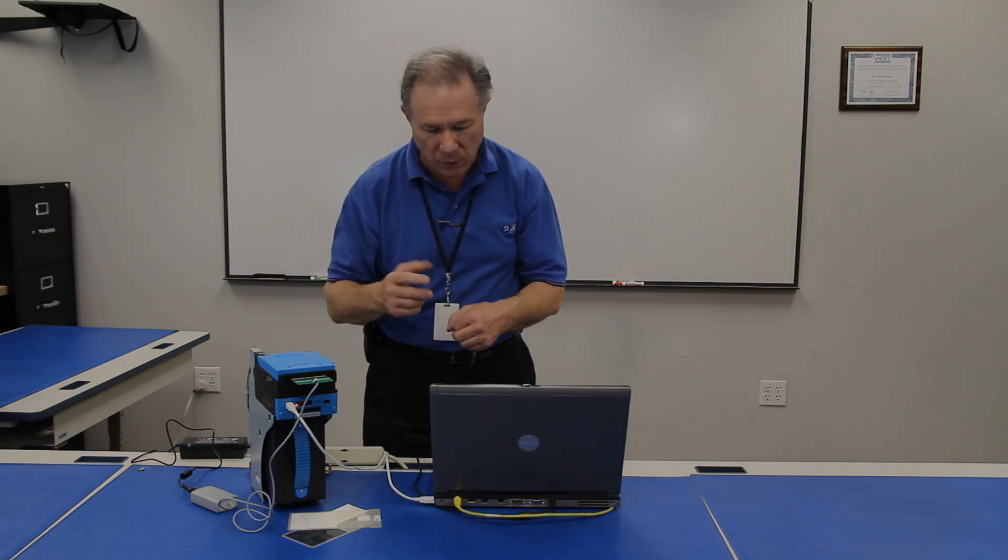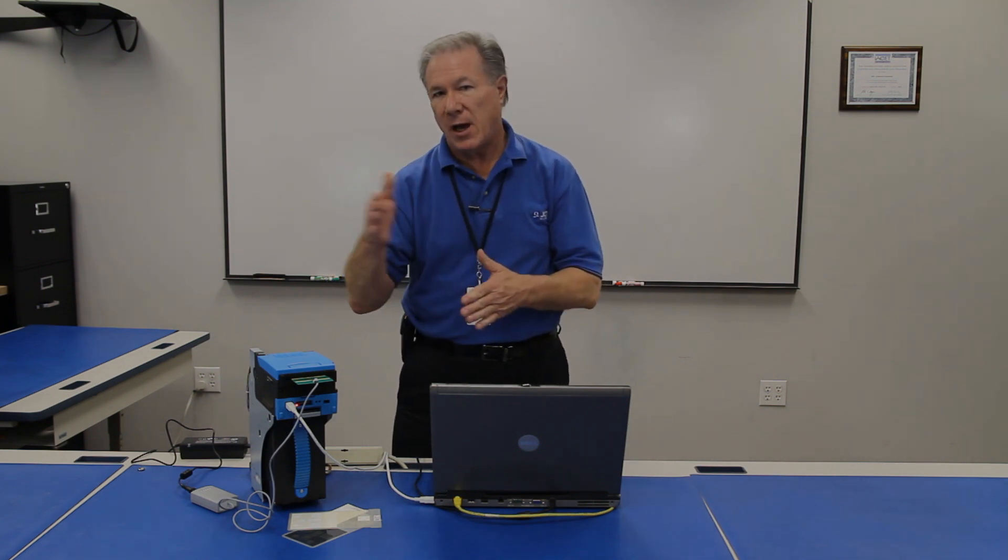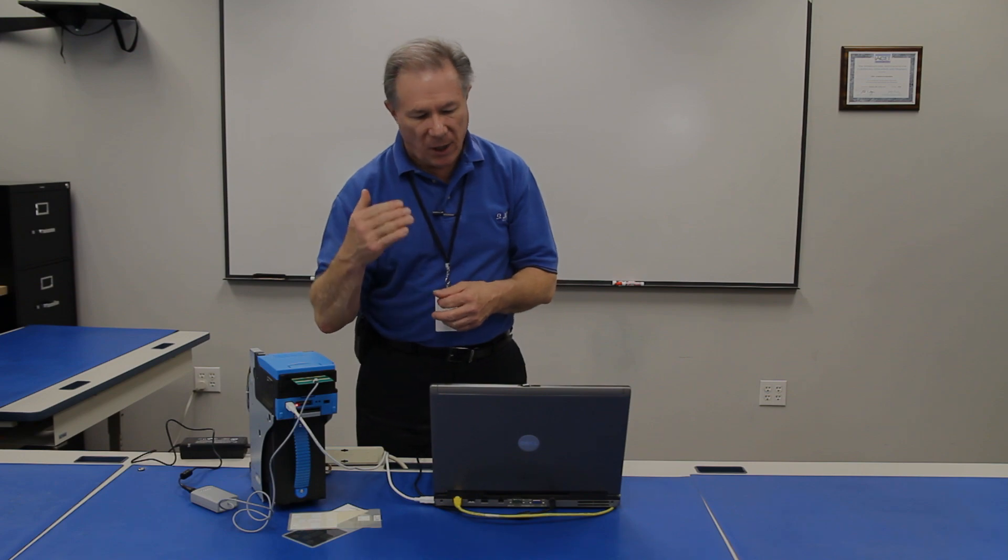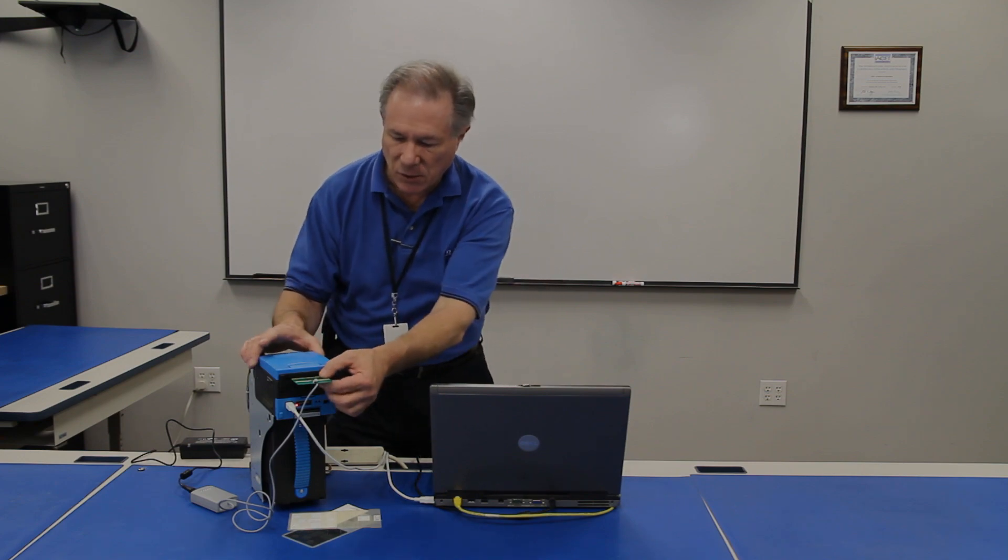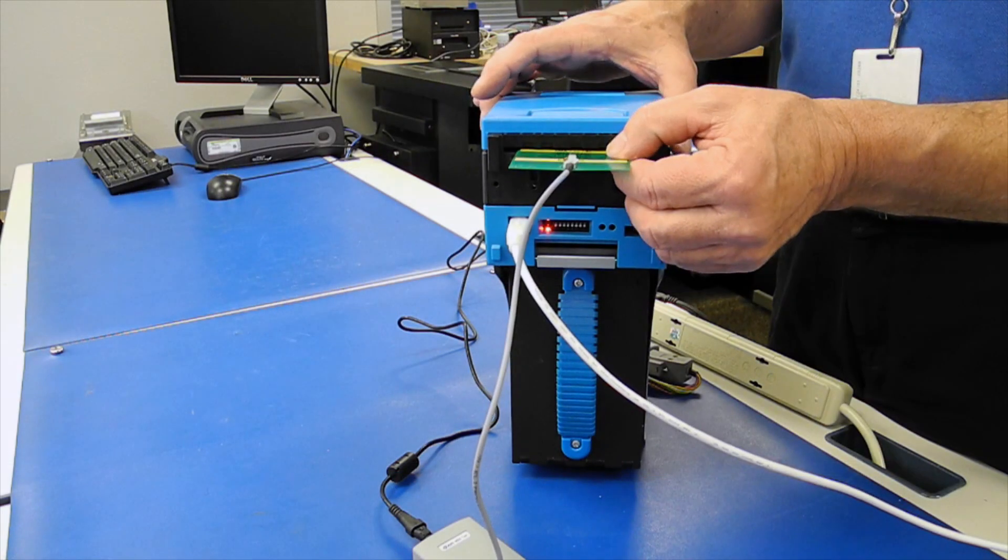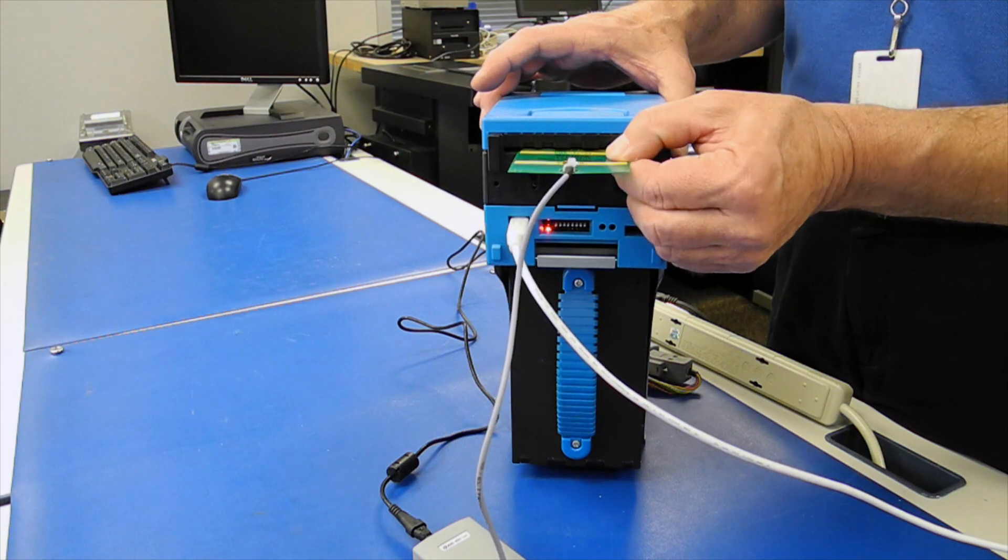And how you get that value to change is to slowly move the card in and out of the validator until you get the proper value.